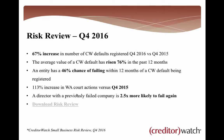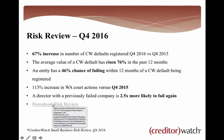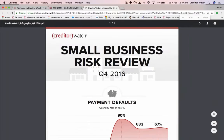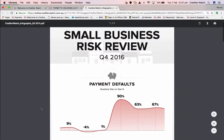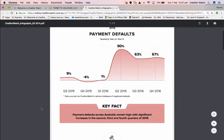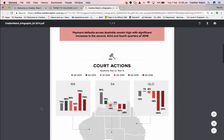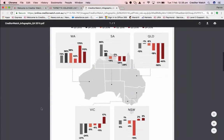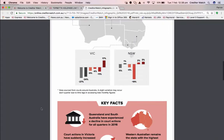And always remember: a director of a previously failed company is two and a half times more likely to fail again. So when you are looking at a credit report within CreditorWatch, do check those cross-directorships. I've put in a link here — when you get the slides in the next couple of days, you'll be able to click through to the small business risk review infographic. You can see payment defaults increasing quarter versus quarter, and court actions from around Australia compared to previous quarters within each state.